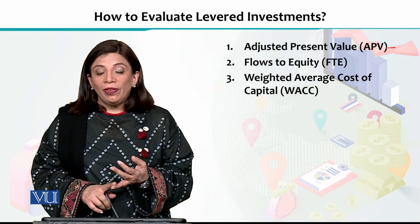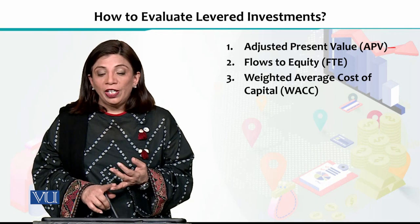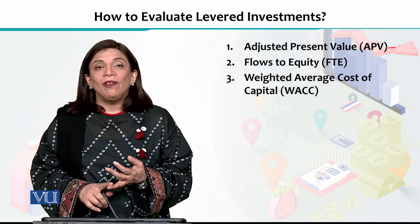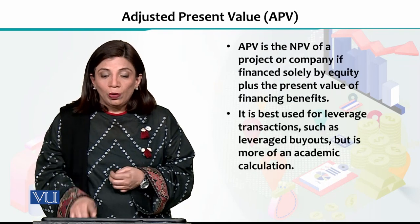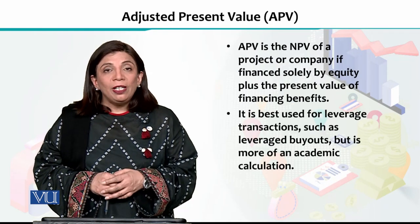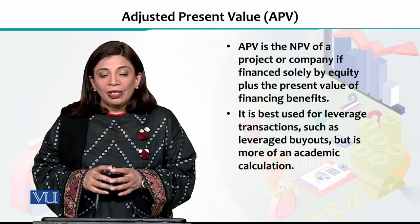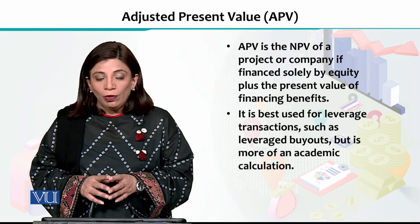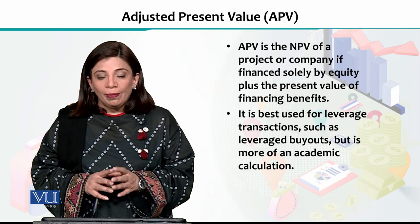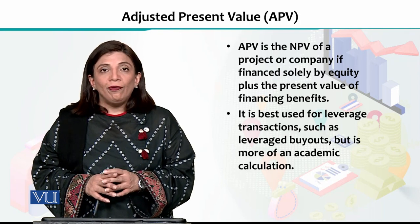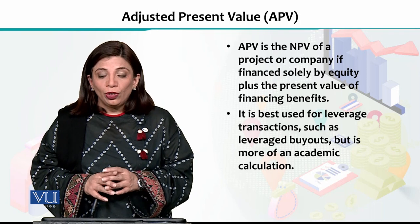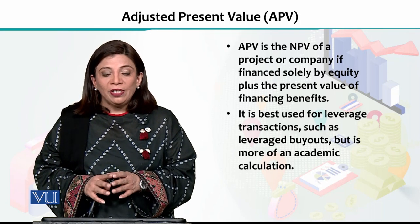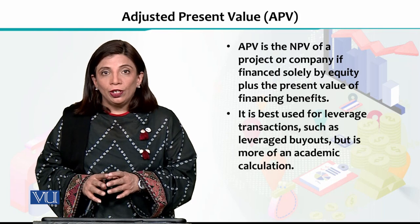The third method is the weighted average cost of capital, which we call WACC. Now, what does adjusted present value mean? It is basically the net present value of a project or company if financed solely by equity, plus the present value of financing benefits.